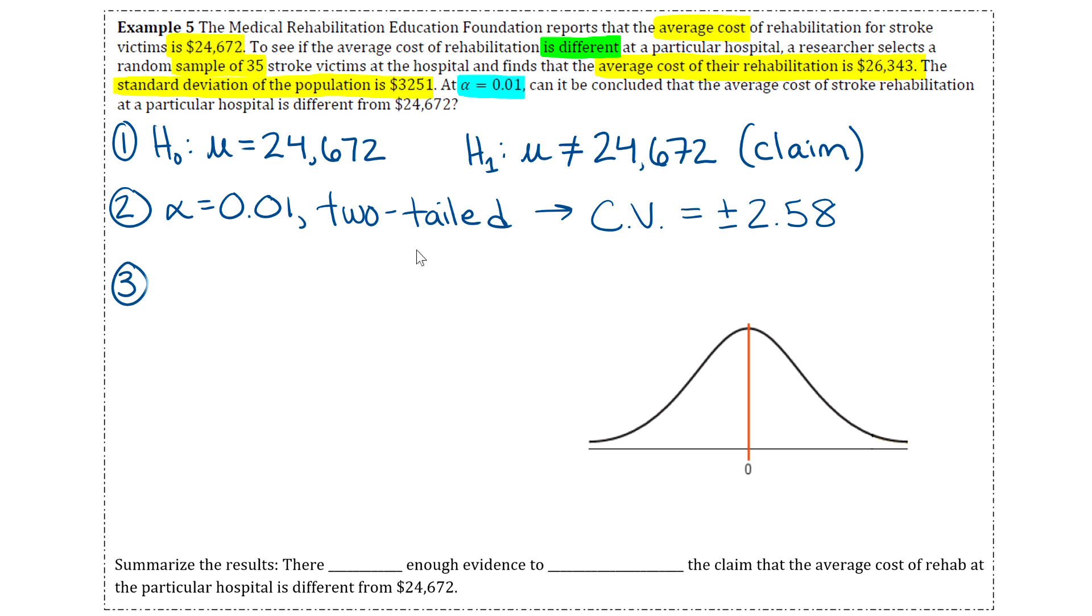Okay, step three is to just use our test value formula for the Z test. So we'll have Z equals, so it's the sample mean. So if you read the question, it says that the average cost of that sample was the 26,343. And then we'll subtract μ, which was the 24,672, divide that by the population standard deviation of 3,251, which we're dividing by the square root of n, so the square root of 35. Okay, you'll put that in your calculator carefully with parentheses around the entire numerator and the entire denominator. Round your Z value to two decimal places, and that will come out to be 3.04.